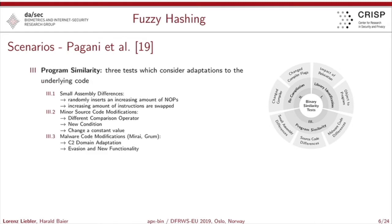Last but not least, the most interesting scenario is the task of program similarity, with three subtasks. First, small assembly differences: you take a binary and insert an increasingly large number of NOPs, or increasingly swap specific instructions. Second, minor source code modifications, where different comparison operators are introduced into the source code, new conditions are implemented, or constant values are changed.